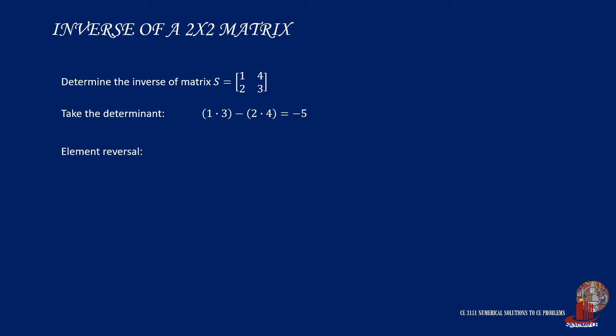Next is to reverse the elements, and there are procedures to follow. First, the elements with the same indices, that is element 1,1 and element 2,2, will swap places. Those with different indices will keep their place but take the opposite sign. In the example, 1 and 3 will swap places, and elements 2 and 4 will take the opposite signs. After determining the parameters, we can plug them in the computation.